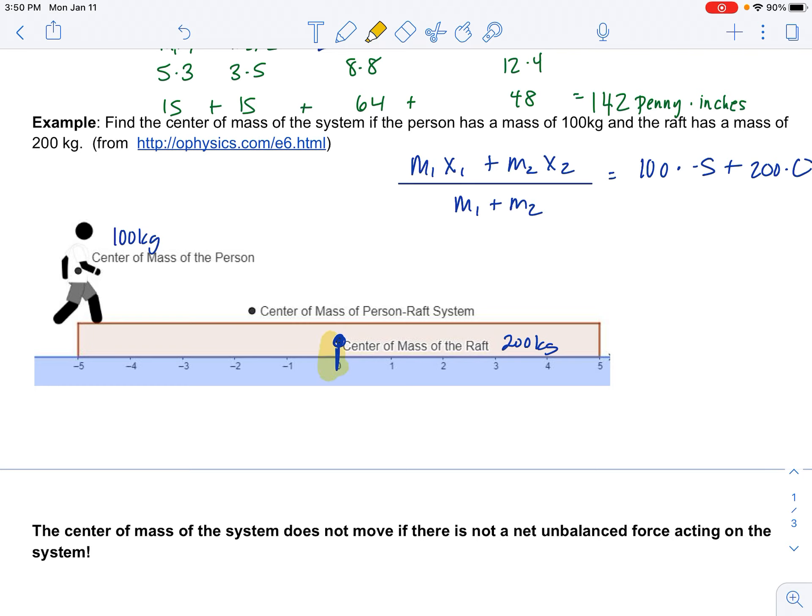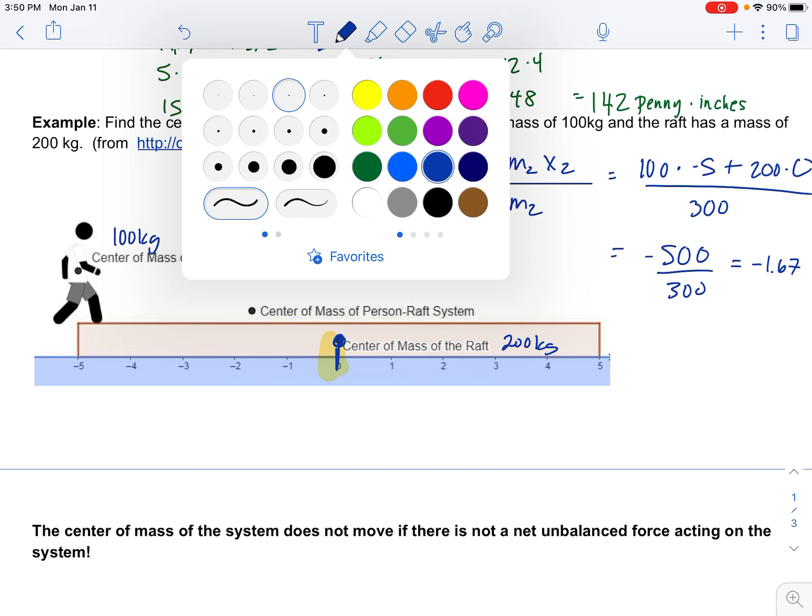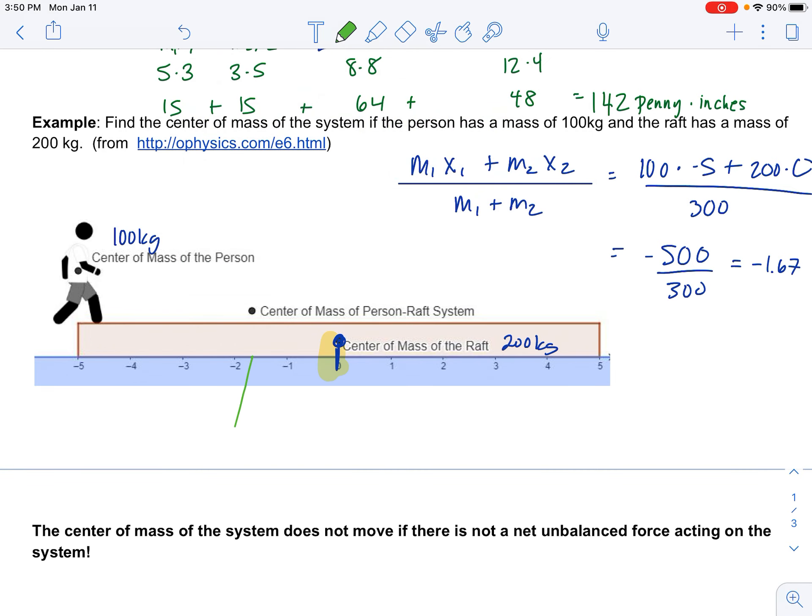So for only two objects, I take each mass times its distance on the number line and then again divide by the total amount of mass. So it's going to be 100 times negative 5 plus 200 times 0. This is at 0. And then divide by the total number of mass, which is 300. So this is going to be negative 500 divided by 300 or negative 5 thirds, which is negative 1.67. So the center of mass of the system is here.